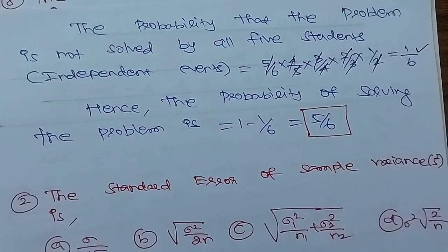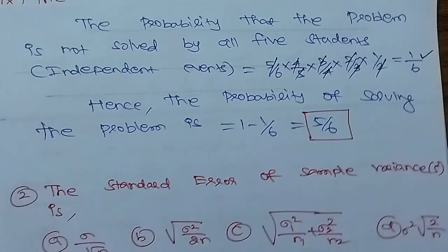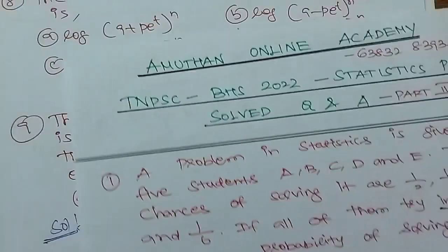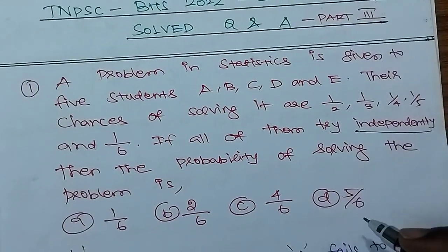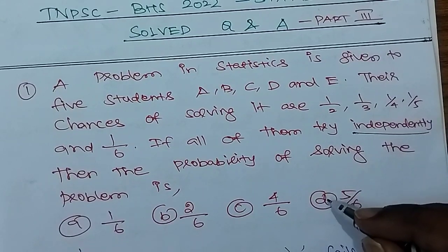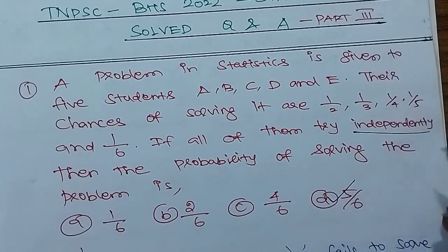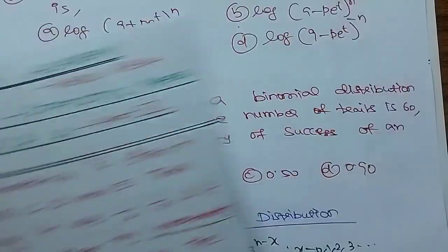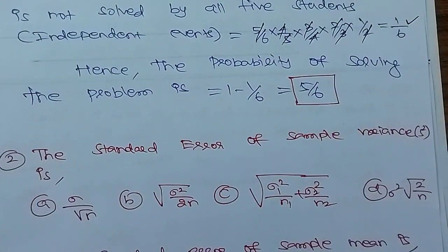Hence the probability of solving the problem is 1 minus 1/6. The final answer is 5/6. Option D is correct.